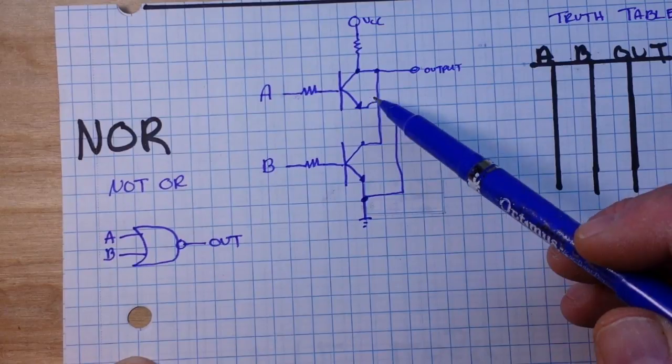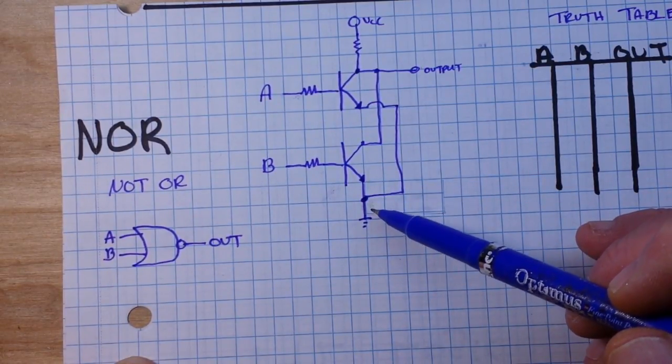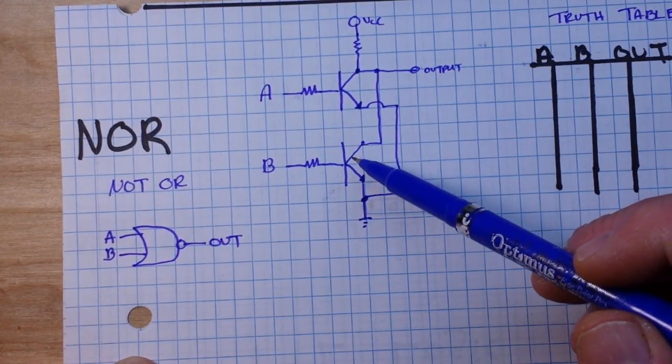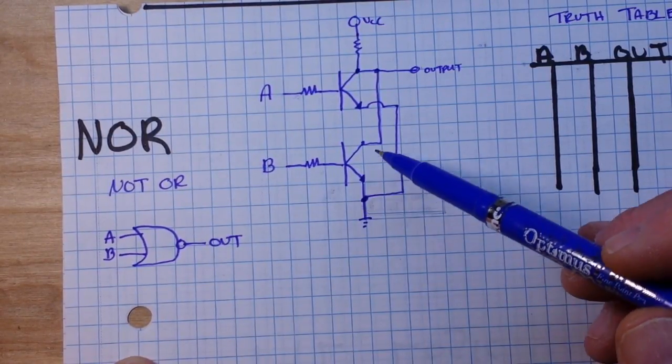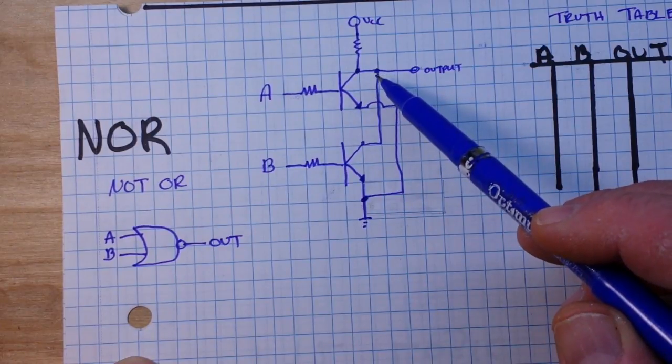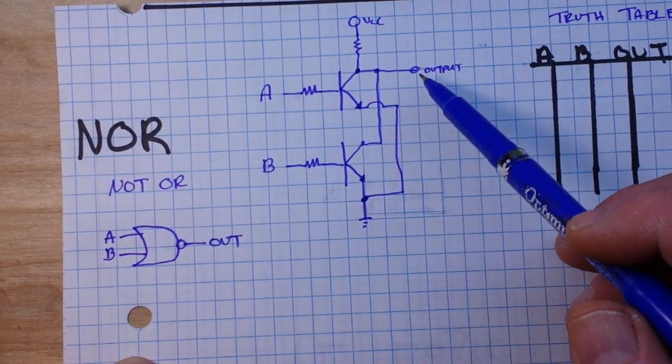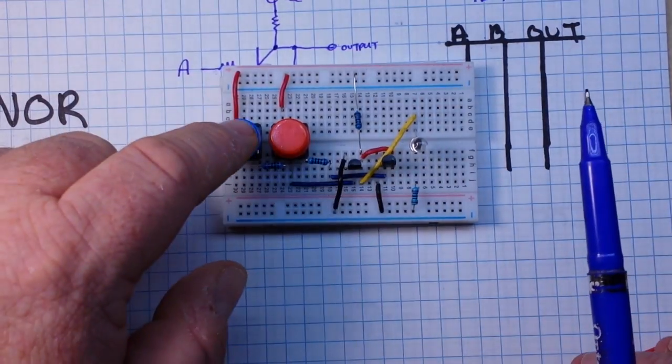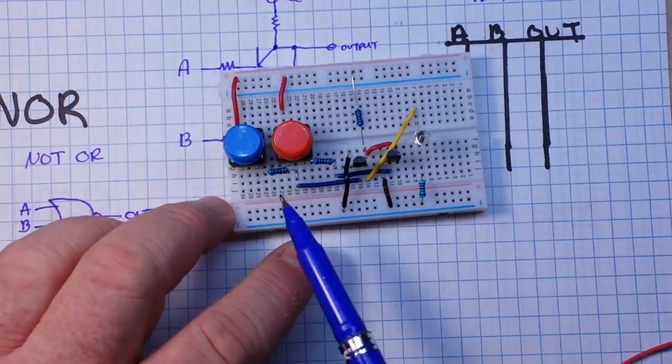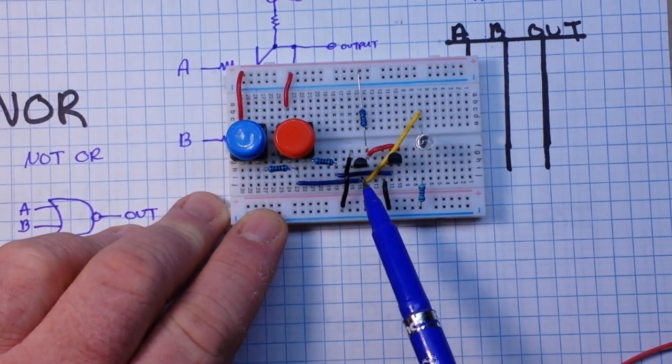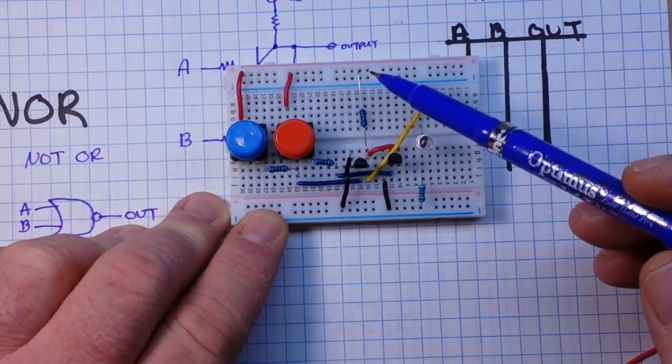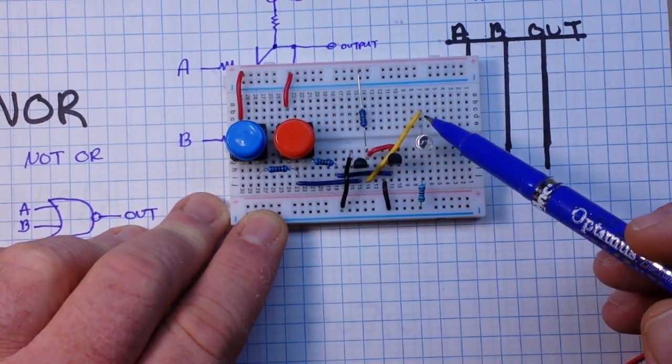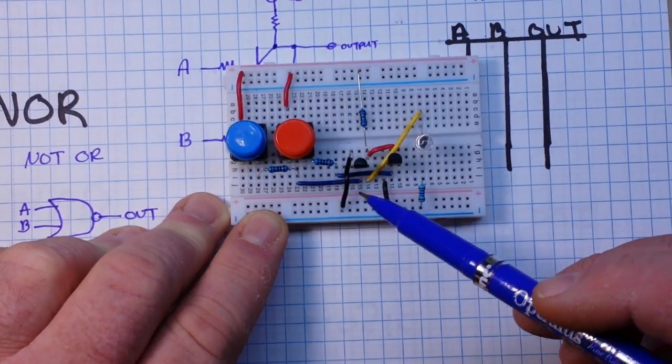VCC also comes to the collector of the second transistor and its emitter ties to ground. And then also we have the output which is tied to an LED in our case. So here is this circuit. Again we have A and B with 1K current limiting resistors tied to the bases of both of these transistors. We have VCC going to the collectors, and we have our output going to the LED and we have the emitters both going to ground.